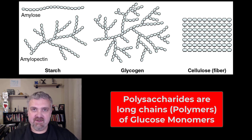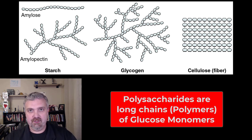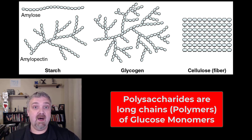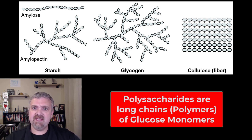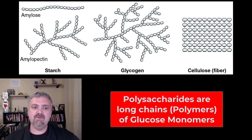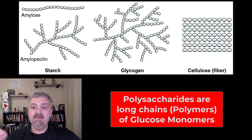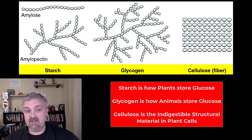Hey everybody, Dr. O here. So we've covered the monosaccharides, which are single saccharides or single sugar units. We've covered the disaccharides, which are pairs. Now we're looking at the polysaccharides. Poly means many, so polysaccharides are going to be long chains of the monosaccharide glucose. There's no longer any galactose or fructose. These can be either from a few to a thousand or more glucose units long. The three kinds of polysaccharides we talk about are going to be starch, glycogen, and cellulose.